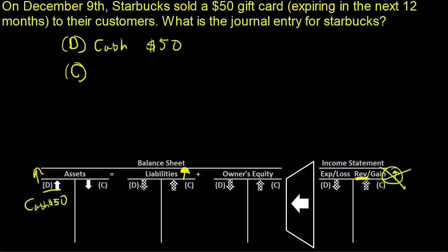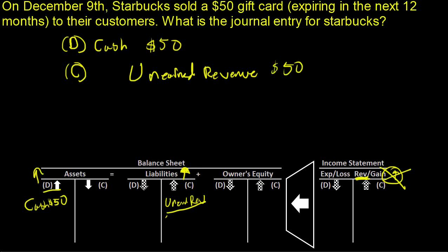That's not right, because we haven't done it. We haven't made our mocha latte or whatever your caffeinated beverage is. Instead, we have to show that in the future we're going to have to provide services. What we call that account is unearned revenue, and it's a liability account. Unearned revenue goes under liabilities. So unearned revenue of $50 — that's essentially letting us know that Starbucks got some cash, but they still have to provide their mocha lattes or whatever it is.